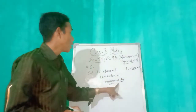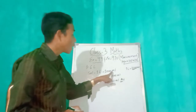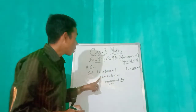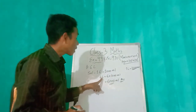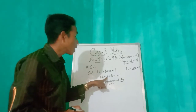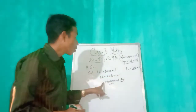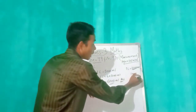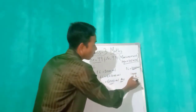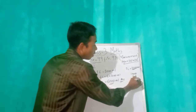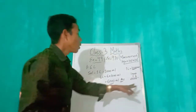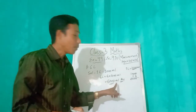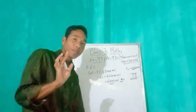So 6000 milliliters — one liter equals 1000 mL, so therefore six liters equals six into 1000 mL. Six multiplied by 1000 gives us 6000 mL. Have you got it?